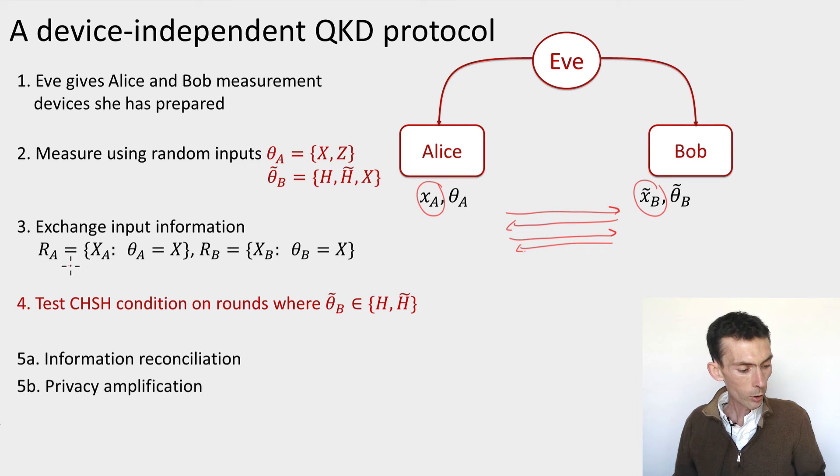First of all, the rounds for which their inputs were the same and equal to the X input, the corresponding outputs will be labeled as R_A for Alice and R_B for Bob. And these are the bits that are going to be used for the raw key. So these we set aside. The remainder rounds, Alice's input is X or Z and Bob's input is H or H tilde.